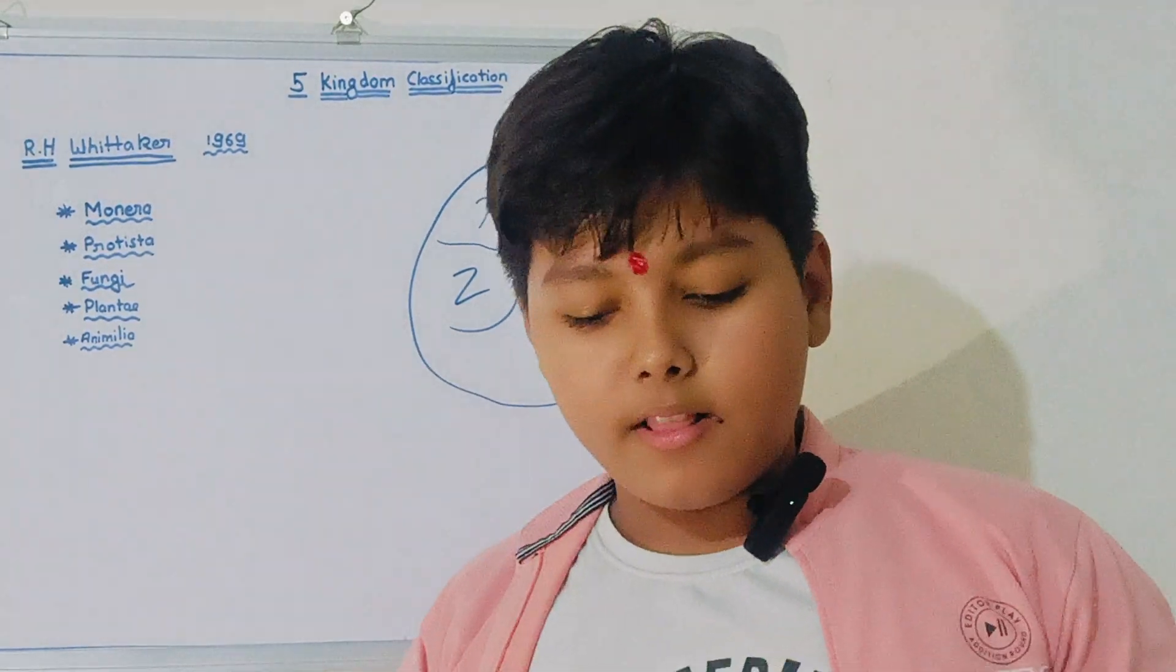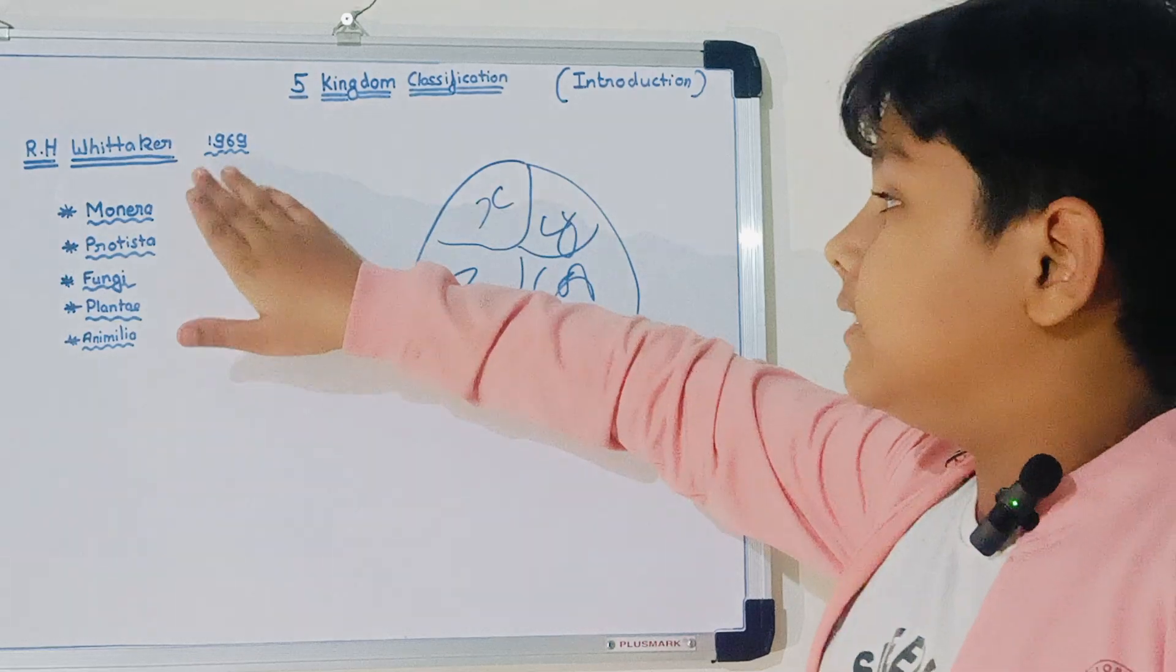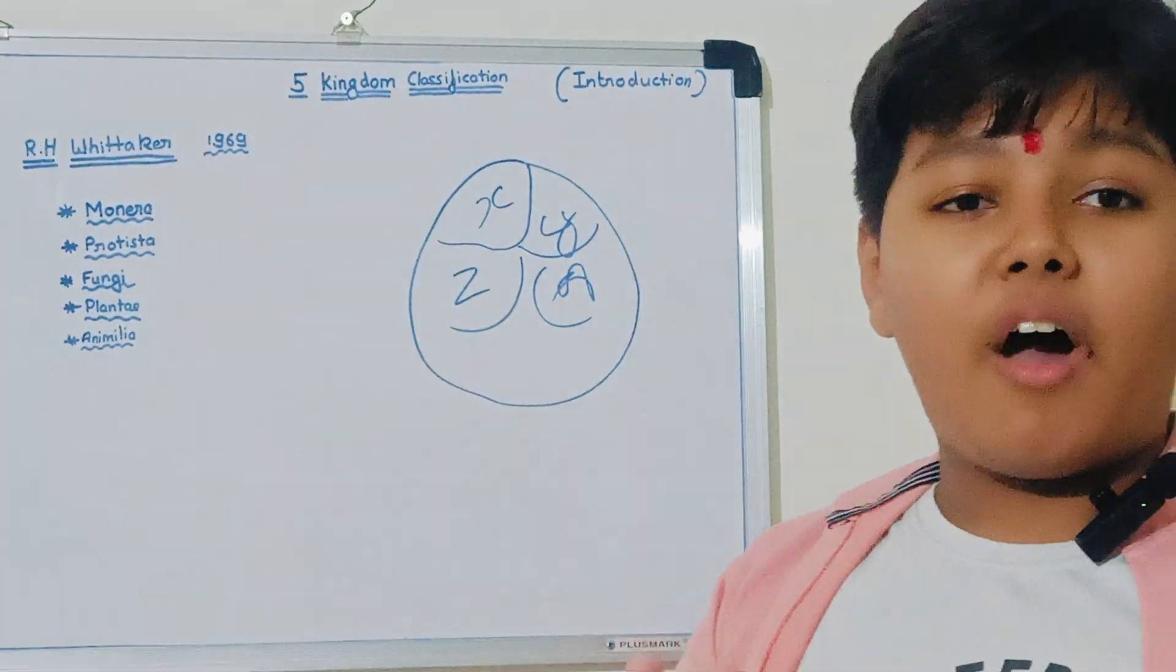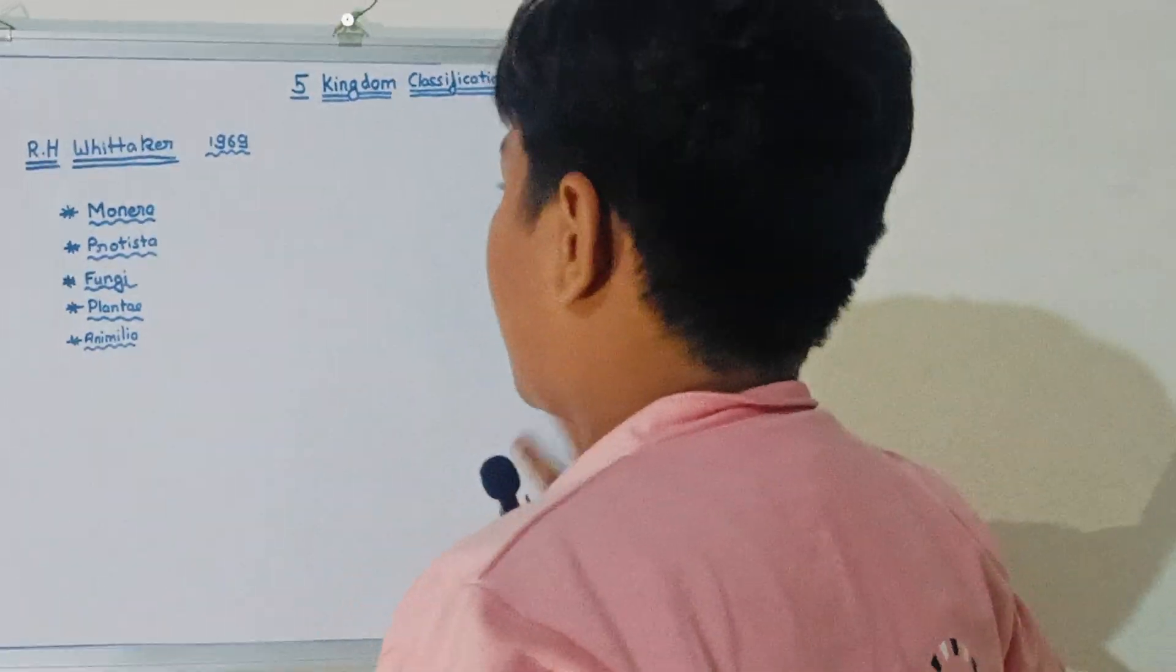So everybody will divide itself. So in the same way, R.H. Victor divided all the kinds of organisms in mainly five kinds. Each kind is different.